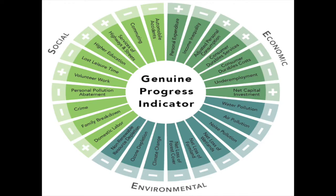The genuine progress indicator is a monetary-based index that adjusts gross domestic product — being the total value of goods and services produced — to reflect social, environmental and economic costs and benefits. The adjustments are positive for benefits such as volunteer labour and education, and negative for costs such as crime, unemployment and environmental degradation.